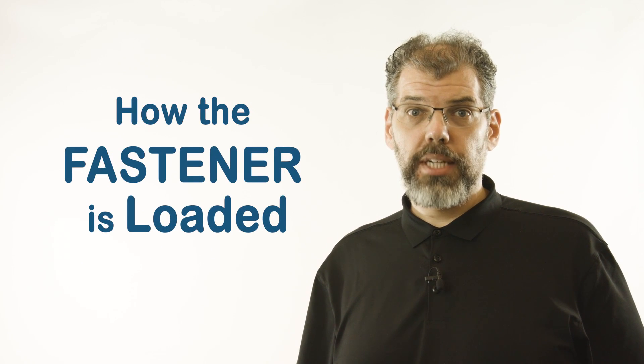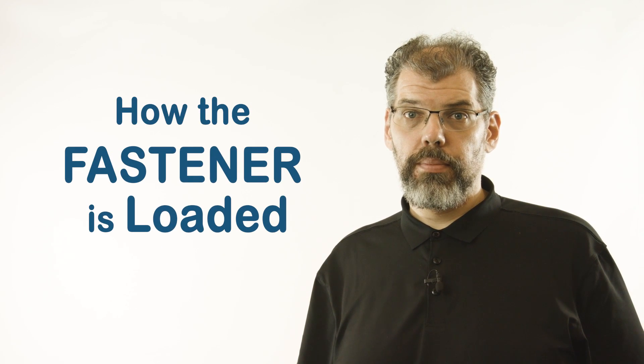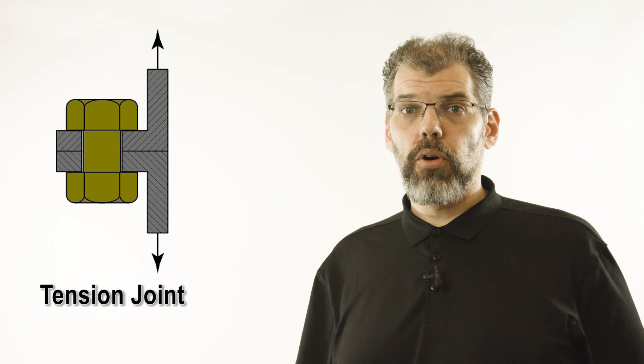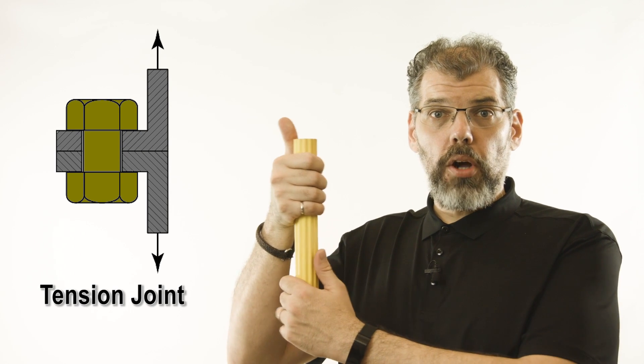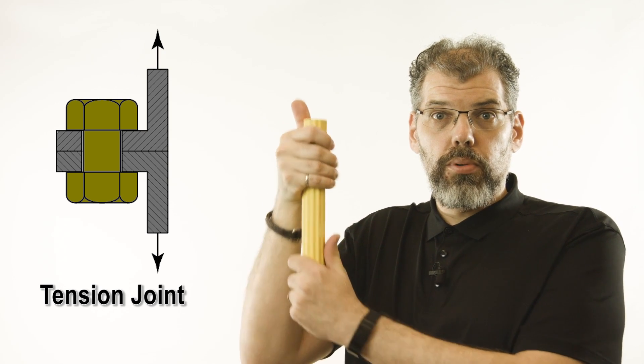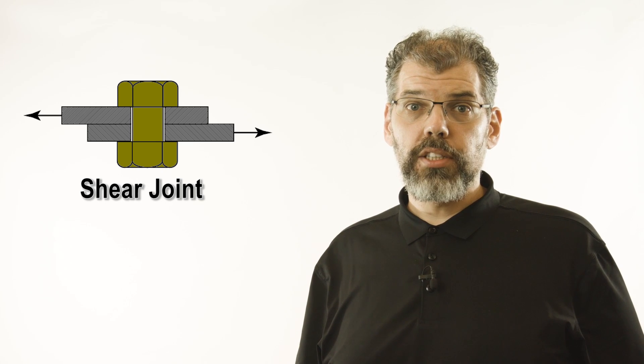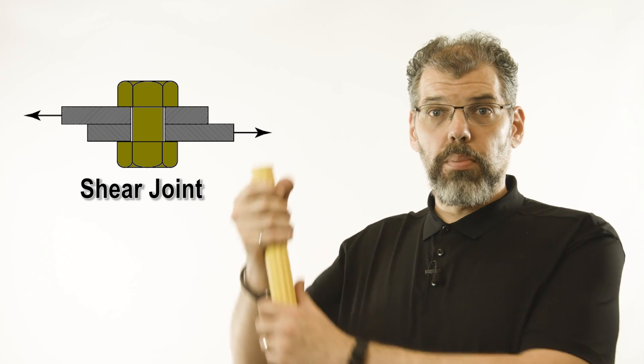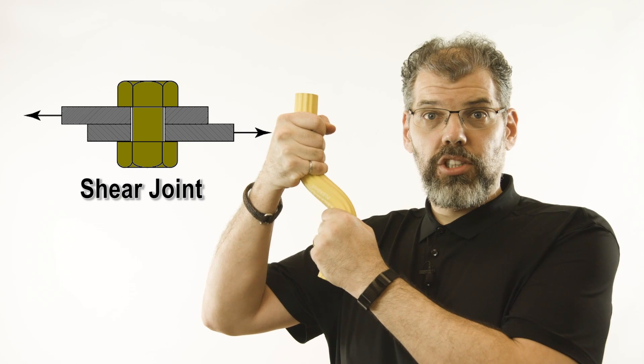In addition to the type of fastener, we can also categorize mechanically fastened joints based on the way the fastener is loaded. There are two primary loading modes possible for a mechanical fastener. A tension joint relies on load passing through the fastener along its axis, causing tensile stresses and elongation of the bolt. Conversely, a shear joint relies on load passing through the fastener perpendicular to its axis, causing shear deformation and shear stresses within the bolt.